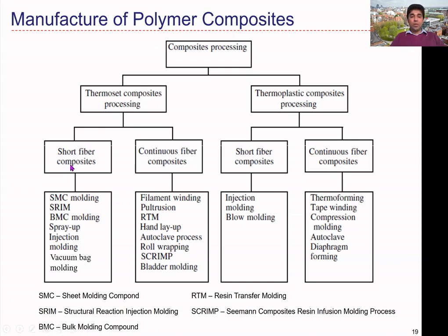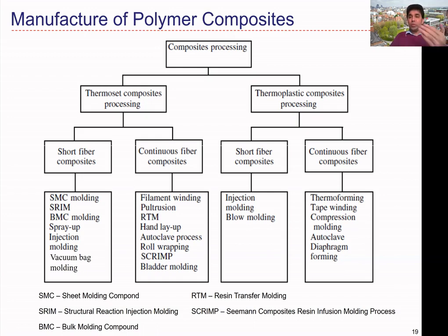For short fibers with thermoset matrix, we can use SMC (sheet molding compound), SRIM, BMC, spray-up, injection molding, and vacuum bag molding. For thermosets with continuous fiber reinforcements, we use filament winding, pultrusion, and RTM (resin transfer molding). Similarly, there are processes for short and continuous fibers with thermoplastic materials. I will focus only on selected commonly used manufacturing techniques in industry.